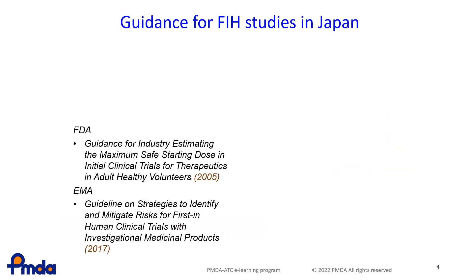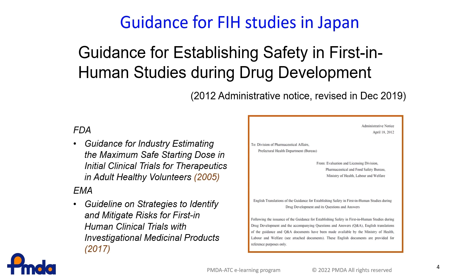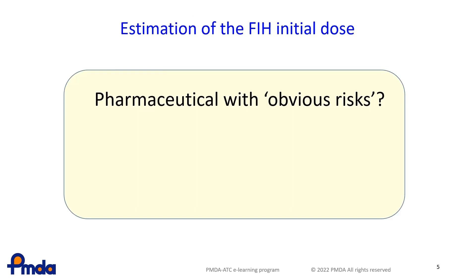Following that case, guidance for the determination of the initial dose of pharmaceutical agents in first-in-human studies has been issued in Japan as well. The methods for determination of initial doses are almost the same in the U.S., EU, and Japan. This shows a summary of the methods for determination of the initial dose in FIH studies shown in the guidance for initial doses in Japan.